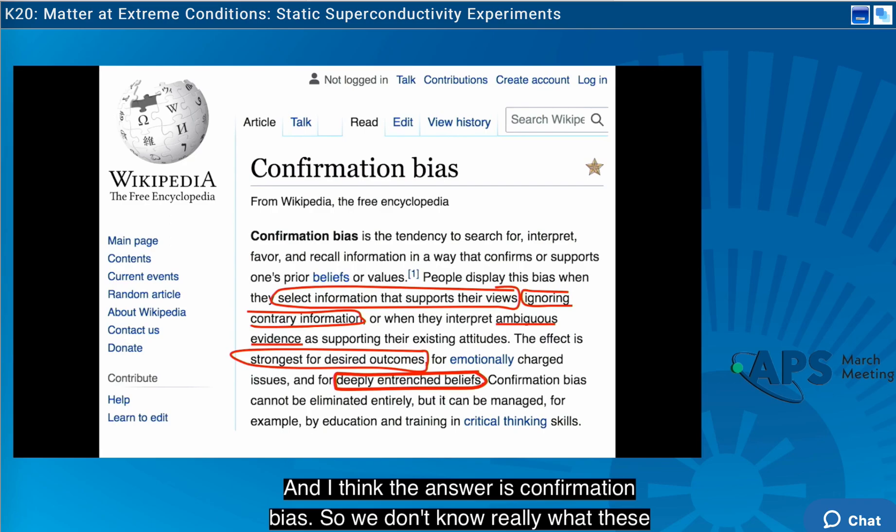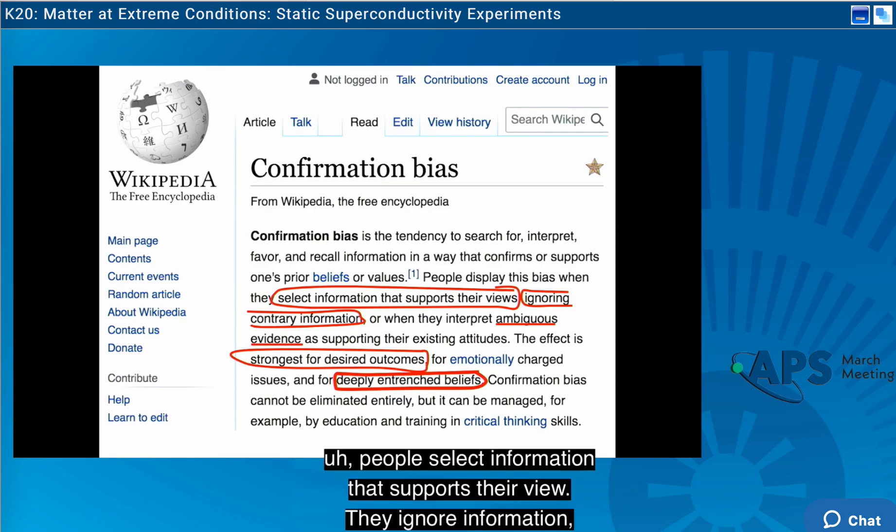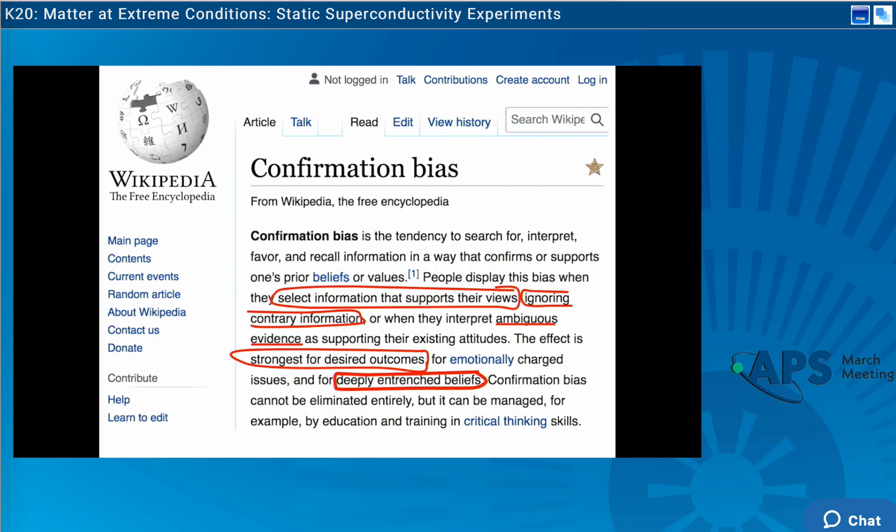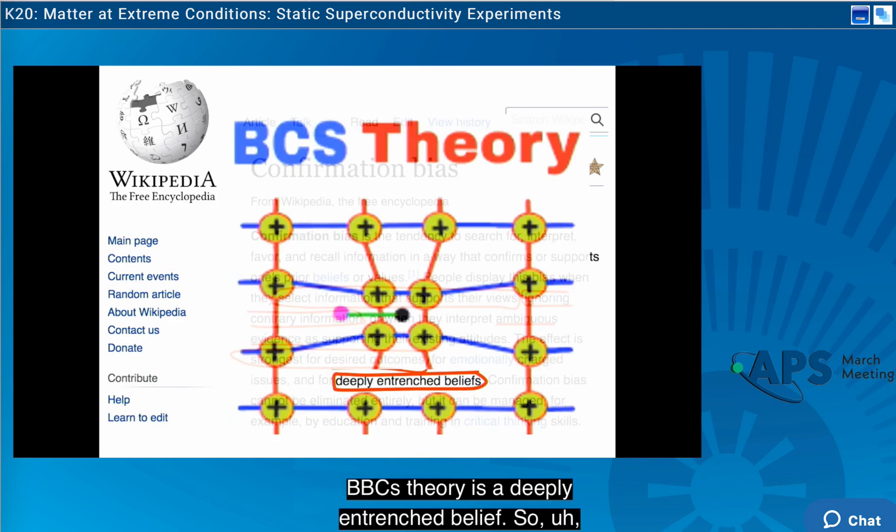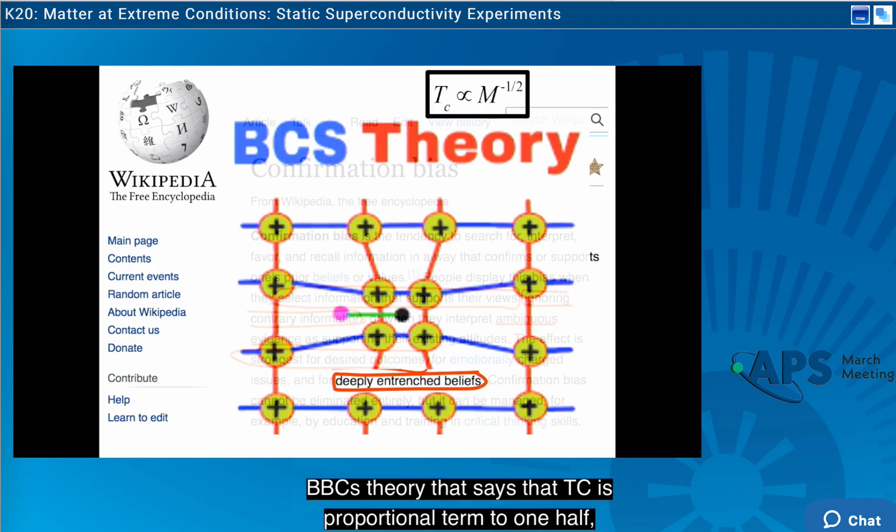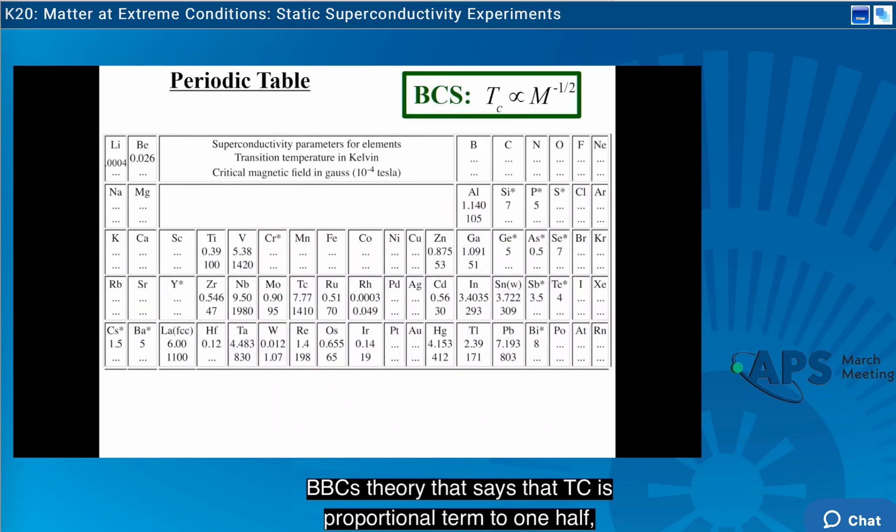And I think the answer is confirmation bias. So we don't know really what these hydrates are superconductors. They are predicted to be superconductors, and so people select information that supports their view. They ignore contrary information, and they interpret ambiguous evidence as supporting what they expect. And this is strongest for desired outcomes and especially for deeply entrenched beliefs. And as we know, BCS theory is a deeply entrenched belief.